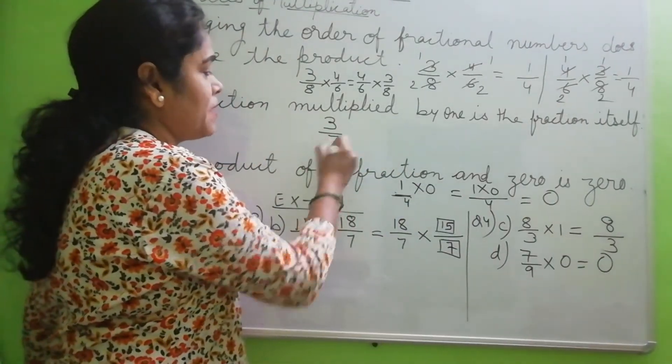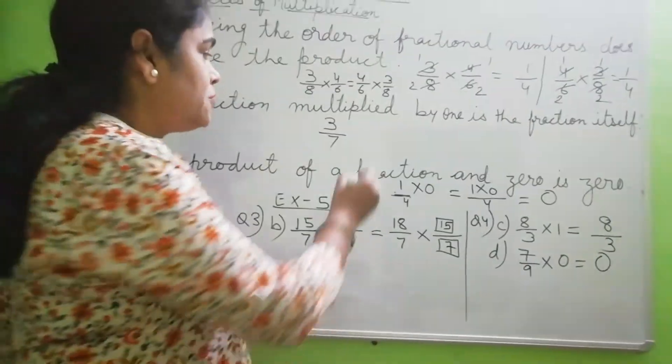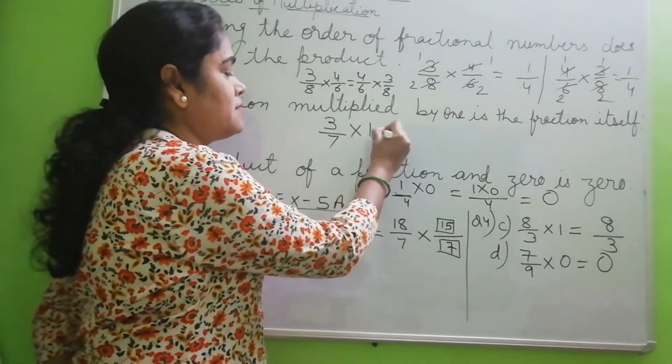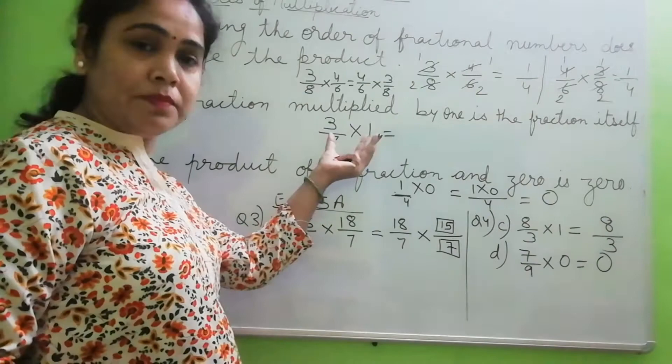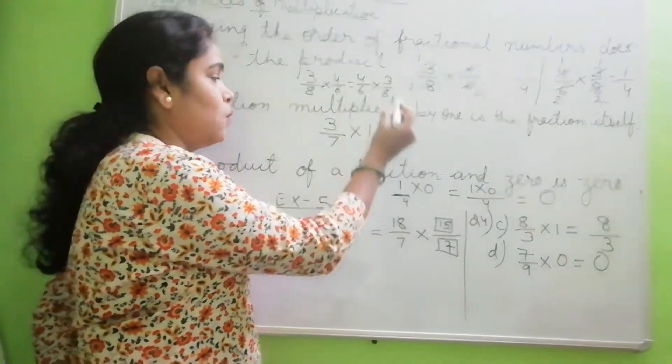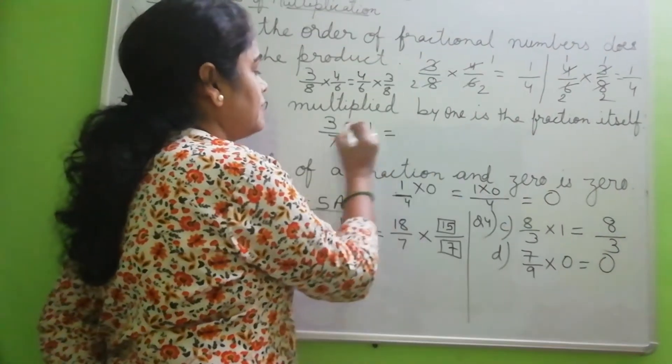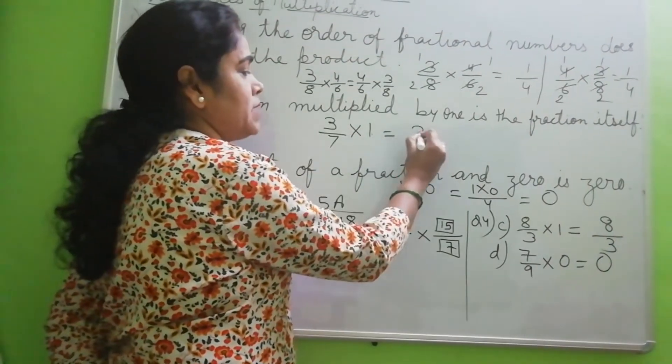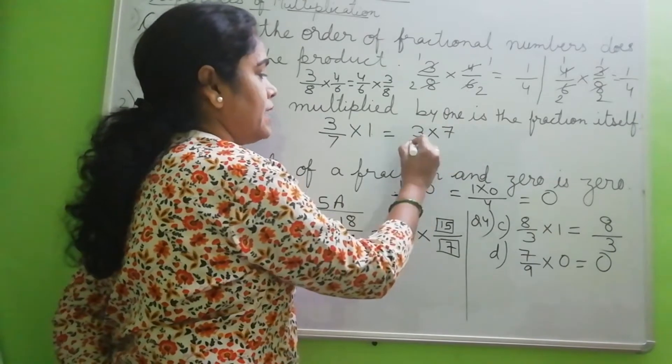So suppose I have given you 3 by 7 and you have to multiply this by 1. You have learned in the rule of multiplication of fraction: if a fraction is multiplied by a whole number, we multiply the whole number and the numerator.